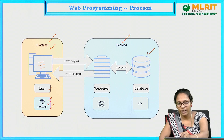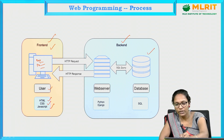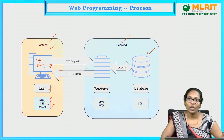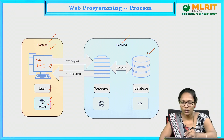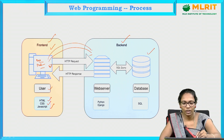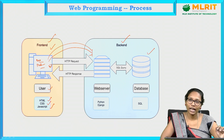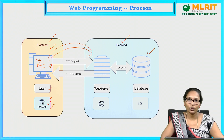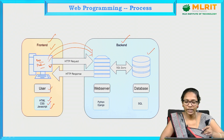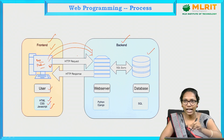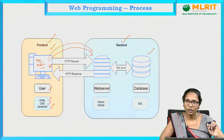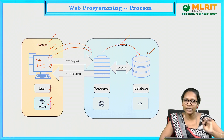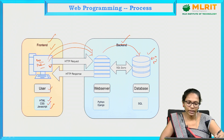Whenever a user raises a request — for example, entering a roll number and password and clicking submit to check attendance — that roll number and password are sent as a request to the server. The server checks whether this roll number exists in the database, because the student already registered. The server checks whether these details are available by querying the database, where registration details were saved.